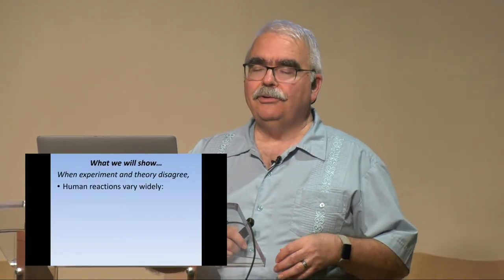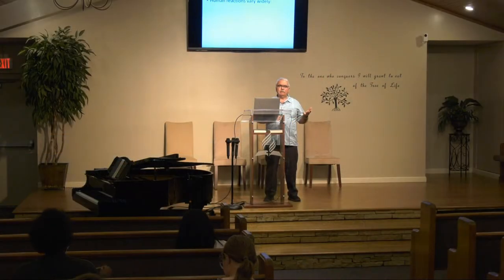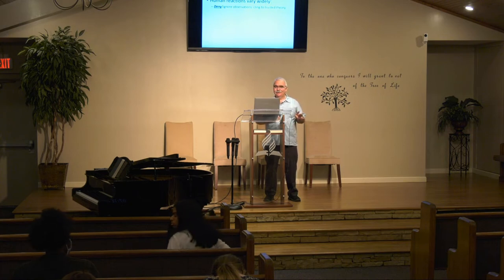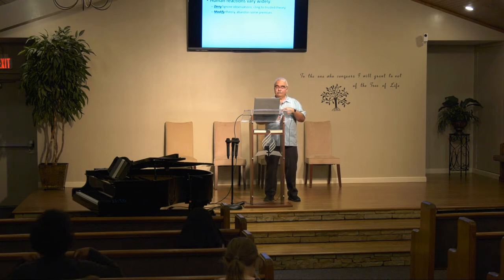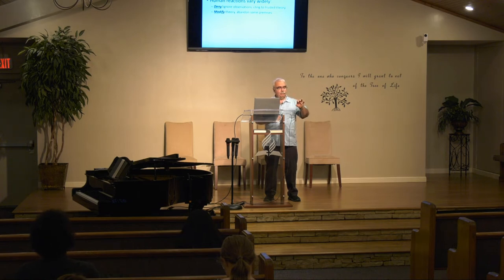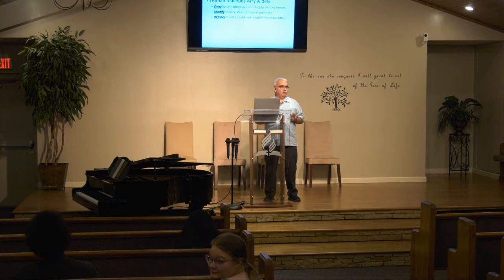When I have a favorite theory, do some tests, and it turns out that doesn't work — what do I do? Human reactions vary widely. One is I deny it — deniers just won't listen, they deny the observations that conflict with their view. Another reaction is to modify the theory, give up certain key parts, and say maybe I was wrong. We might abandon some parts and make it work. Another is to replace the theory altogether — I'm sorry, we were wrong, let's develop a new explanation, build a model from the ground up.